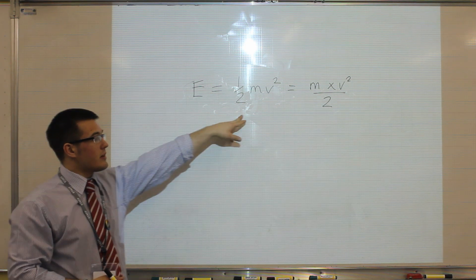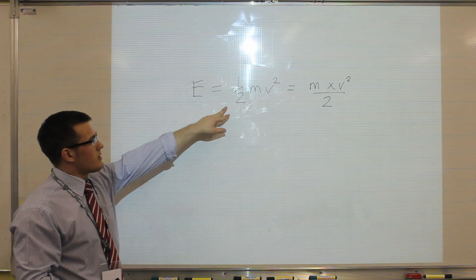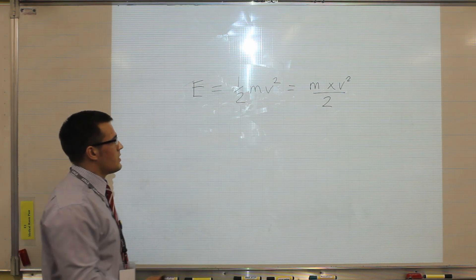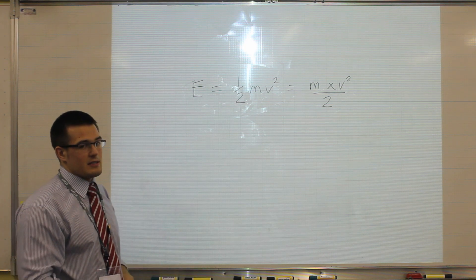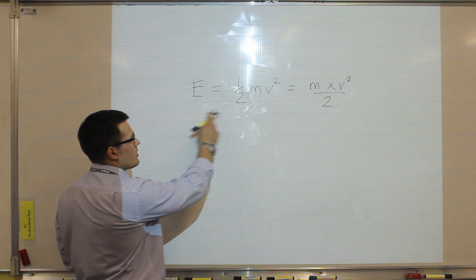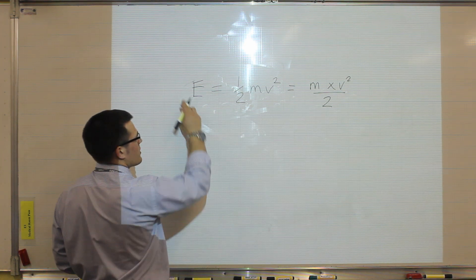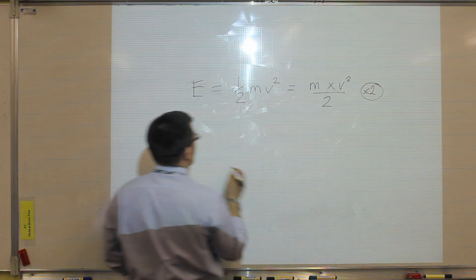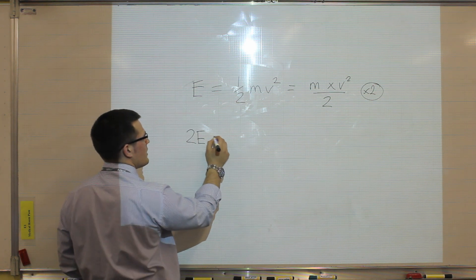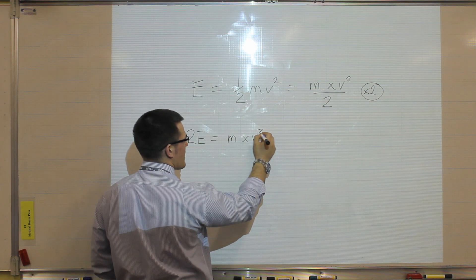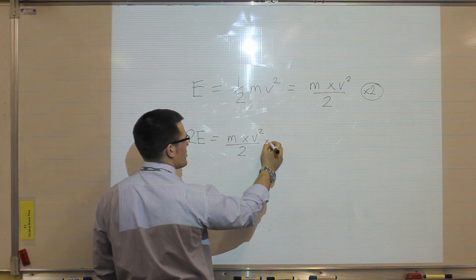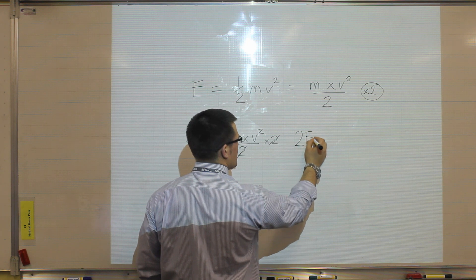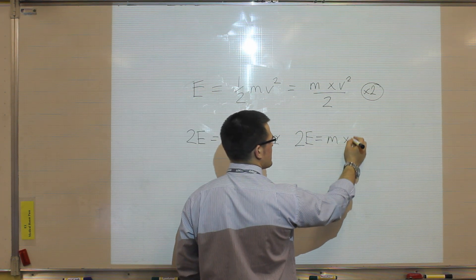When you get it written in your exam booklet, it will be written like that. We need to recognise that the divided by two can be written as multiplied by a half, in order to allow us to rearrange it easily. To rearrange it so that mass is the subject, we want to move the two up onto the side with energy, so we multiply both sides of the equation first by two. So we'll have 2E is equal to mass times velocity squared divided by two, multiplied by two — so the twos will cancel out — and we'll be left with 2E is equal to mass times velocity squared.